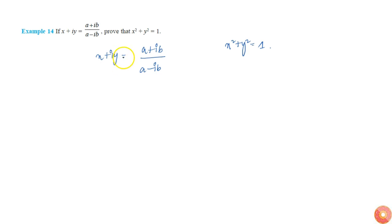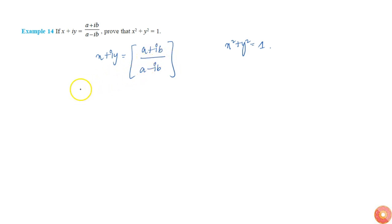But this is not in the complex form — that is, in the form of x plus ib — so that we can compare. So let's bring it into the standard form. So this will become a plus ib by a minus ib.